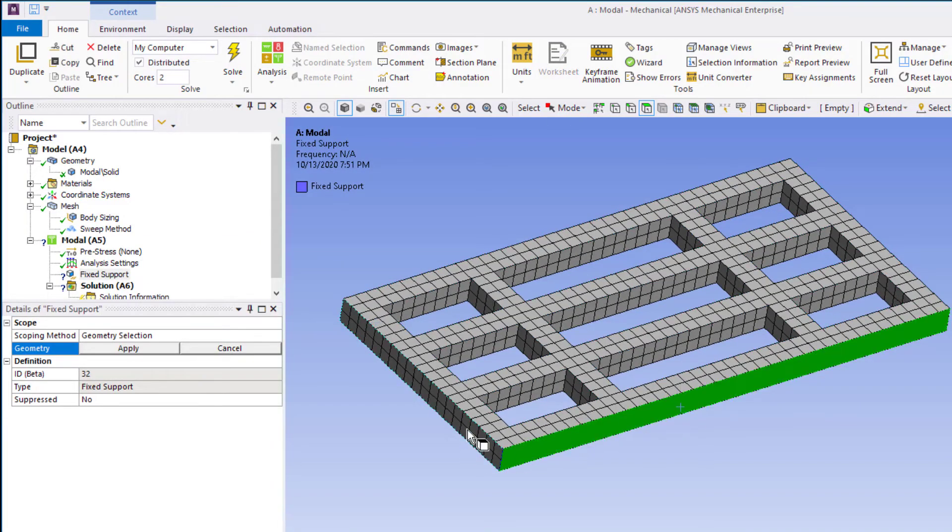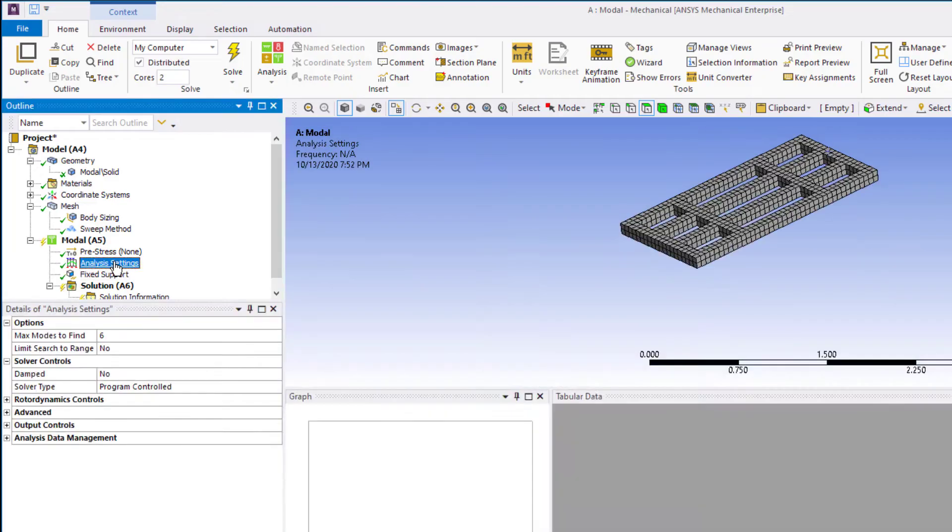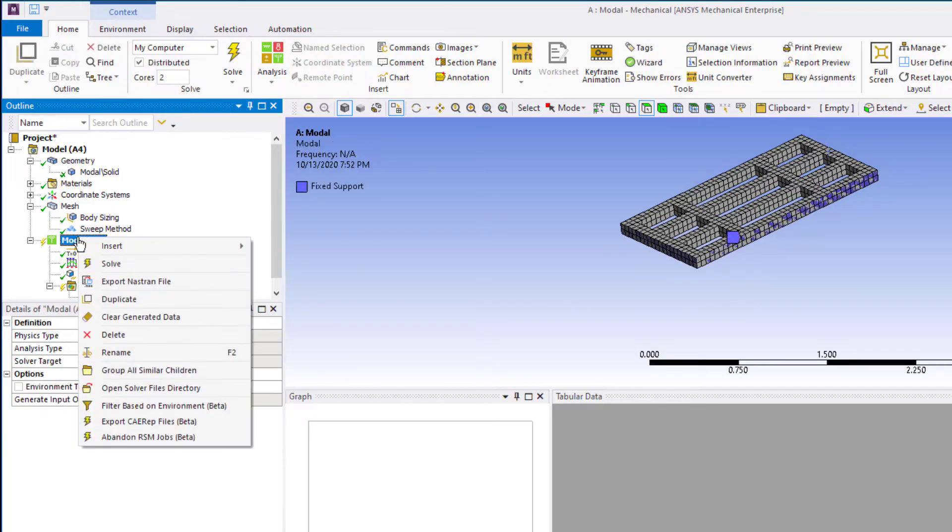Insert fixed support and scope it to the entire perimeter of the frame. Under analysis settings, we can specify maximum number of modes to find and under limit search to range we can specify the frequency range. In this example, the number of modes to extract will be the default number 6 and the default frequency range will be used. Next, solve the model.